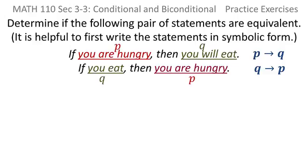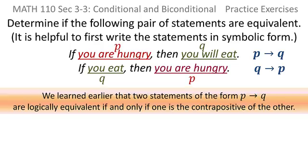Now to prove statements are equivalent, you can just do the truth table for both and show that they come out exactly the same. But I want to use something else that we learned to do it another way. We learned earlier that two statements of the form p implies q are logically equivalent if and only if one of them is the contrapositive of the other. If we use that piece of knowledge, we can avoid the truth table route. So I'm going to do it that way.